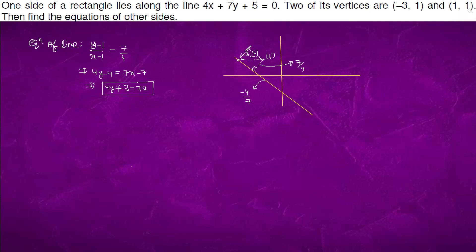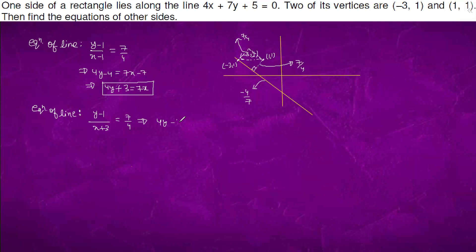We can write the equation of this line with slope 7 by 4, passing through (−3, 1). The equation of the line will come out to be: y minus 1 over x plus 3 equals 7 by 4. So it will come out to be 4y minus 4 equals 7x plus 21, giving 4y equals 7x plus 25. We now have the equations of this line, this line, and this line.